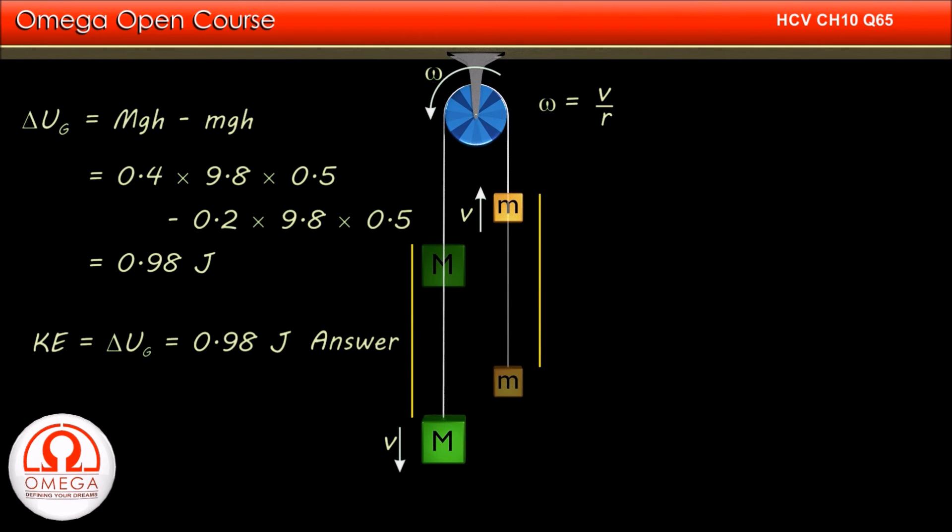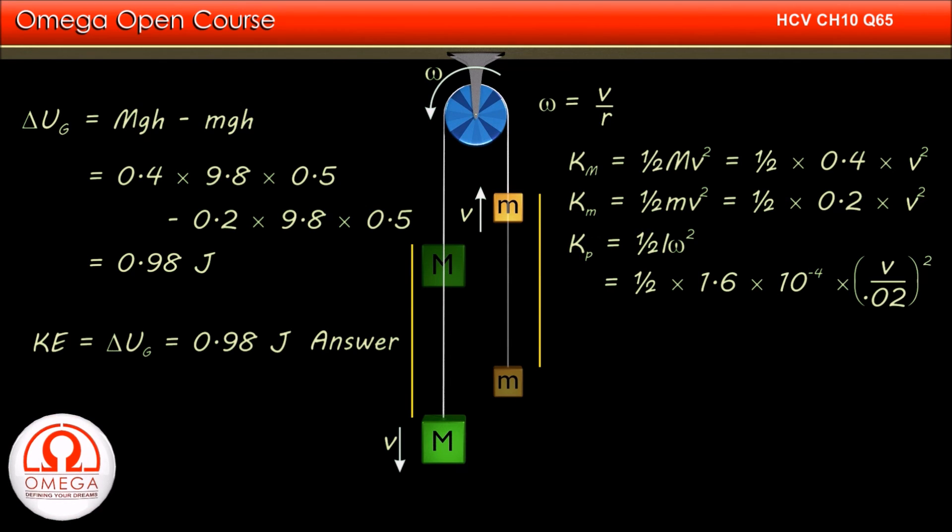The kinetic energy of the 400 gram block at this instant is half × 0.4 × V². Kinetic energy of the 200 gram block is half × 0.2 × V², and the rotational kinetic energy of the pulley is half × moment of inertia, that is 1.6 × 10^-4 × square of angular speed. But the angular speed of the pulley is V by R or V by 0.02. Sum of these energies must be equal to 0.98 joules.